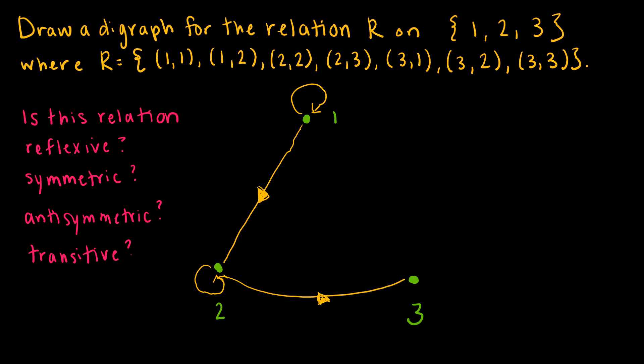And then we have 3 goes to 1, 3 goes to 2, so notice this one I kind of cheated a little bit because I knew what was coming. So you just make kind of 2 that are not quite straight, but a little bit curved, so 3 goes to 2, and 3 goes to itself.